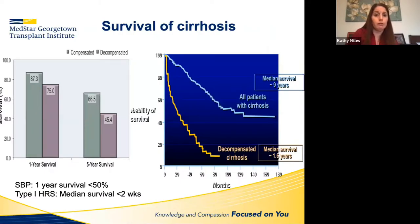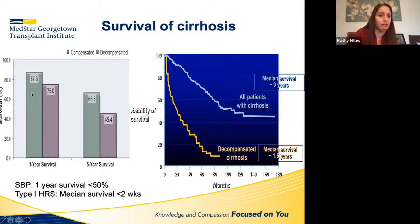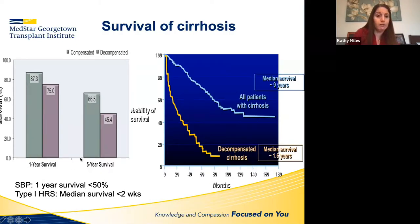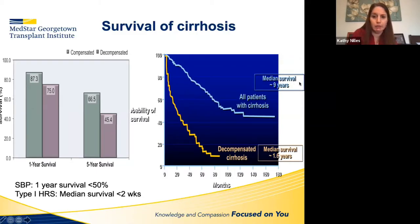In terms of survival of cirrhosis: compensated versus decompensated one-year survival is not significantly different overall, but at five years it's 66% versus 45%. Throwing in SBP or type 1 HRS will reduce survival further. For all patients with cirrhosis, whether compensated or not, median survival is nine years; once decompensated, the median survival drops to about 1.6 years.